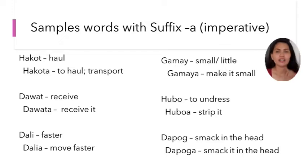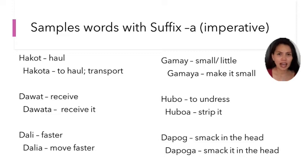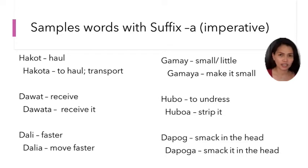Next, we have 'Dawat.' Dawat means receive. 'Dawata' means receive it. Then 'Dali' means faster, and 'Dalia' means to move faster. 'Gamay' means small or little, and 'Gamaya' means put small.